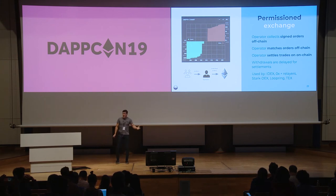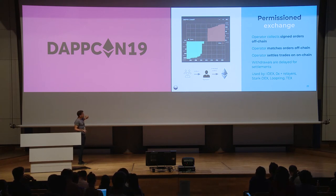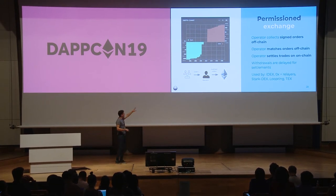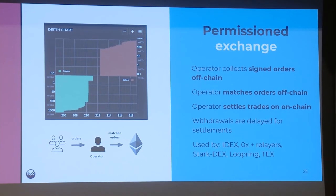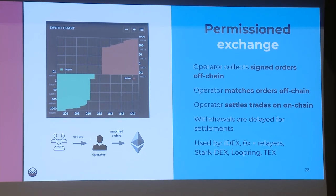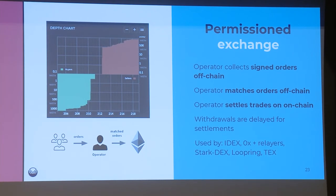These were the main permissionless exchange mechanisms. Here once more is how an operator-driven permissioned exchange works: customers sign orders with their private keys, send them to the operator, the operator does the matching and sends matched orders to the Ethereum chain. Ethereum then verifies all the signatures previously given by the customers and settles everything in a non-custodial way.